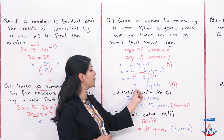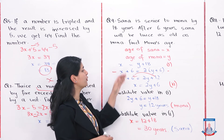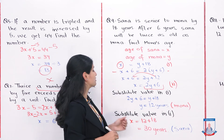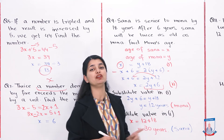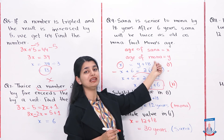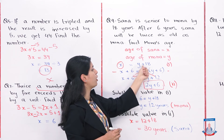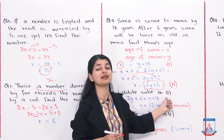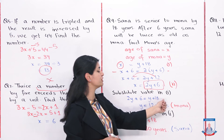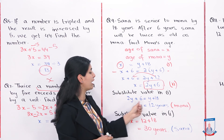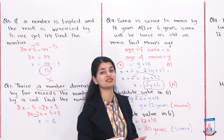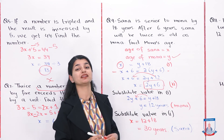Now we substitute the value of x from the first equation into the second. Replacing x with y plus 18, we get 2y plus 6 equals y plus 18. Subtracting y from both sides gives 2y minus y, which is y. Subtracting 6 from 18 gives 12. So y equals 12 years, which is Mona's age.